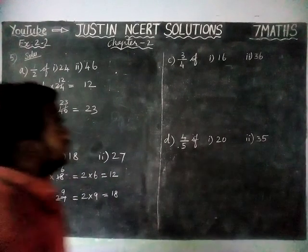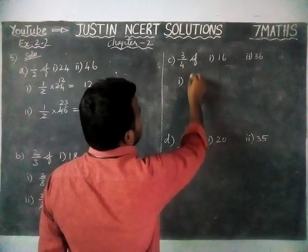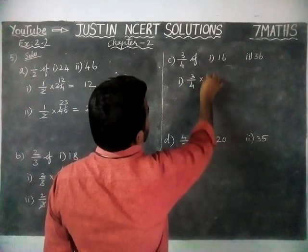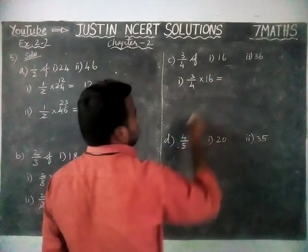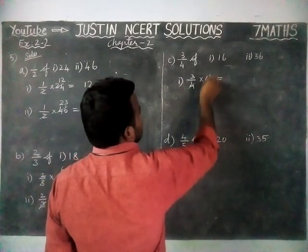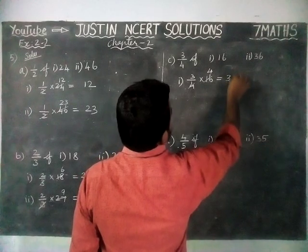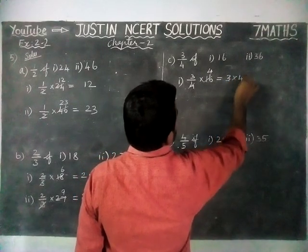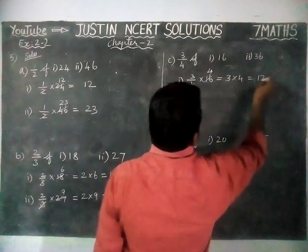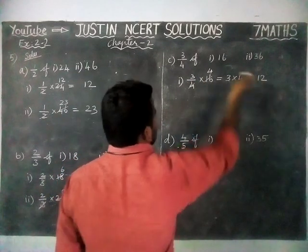Option C, first problem: 3 by 4 of 16 is equal to — we can simplify by 4. 4 goes into 16 four times. Now, 3 into 4: 3 fours are 12. So, 3 by 4 of 16 is equal to 12.